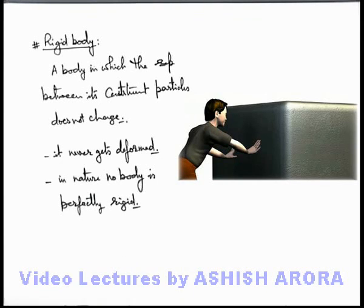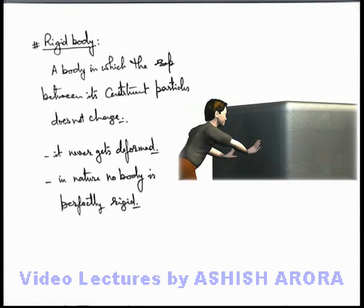Since no deformation can take place in a rigid body, it never stores potential energy, because the body stores potential energy only if it is deformed. Only if it is deformed, then under elastic forces and intermolecular forces of the body, potential energy is stored, and whatever amount of work is done is stored as potential energy. So in case of a rigid body, no deformation can take place, so it never stores any potential energy within the volume of the body.